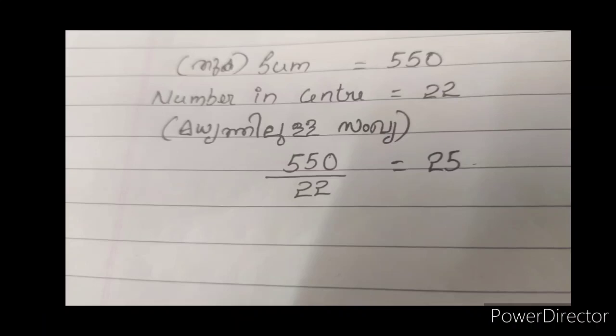25 times the central number will be the total sum of the square. This is what you have to do with this extra question. If you have any questions, please like and subscribe. Thank you.